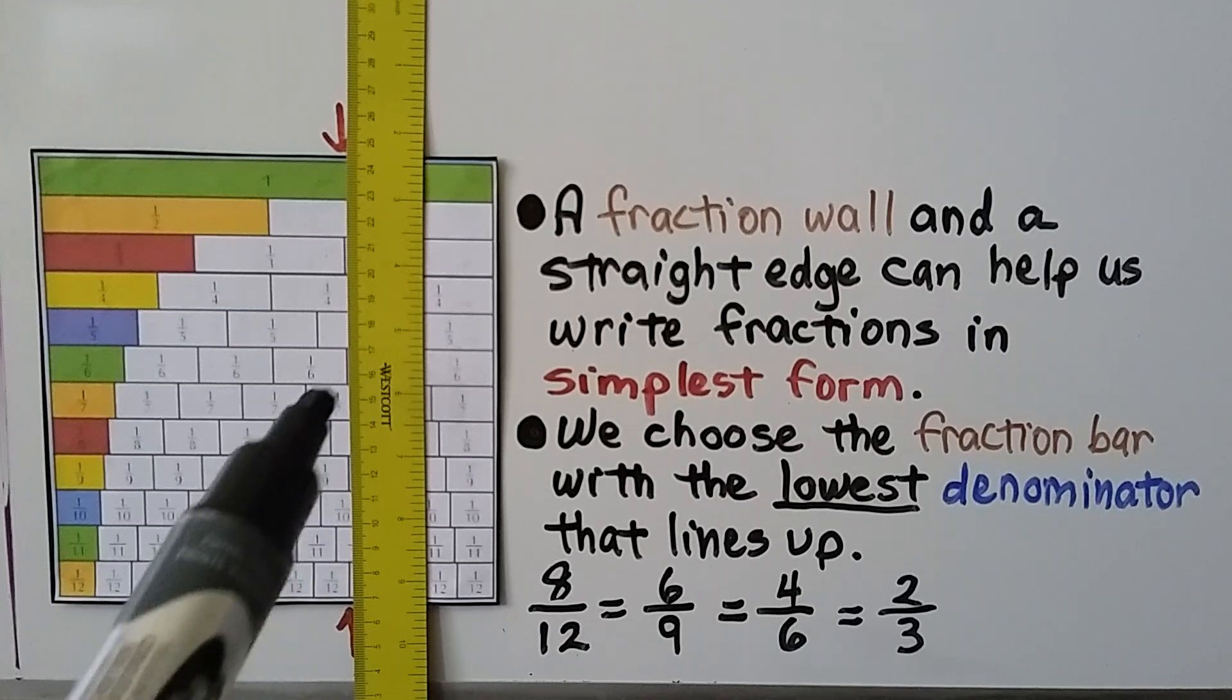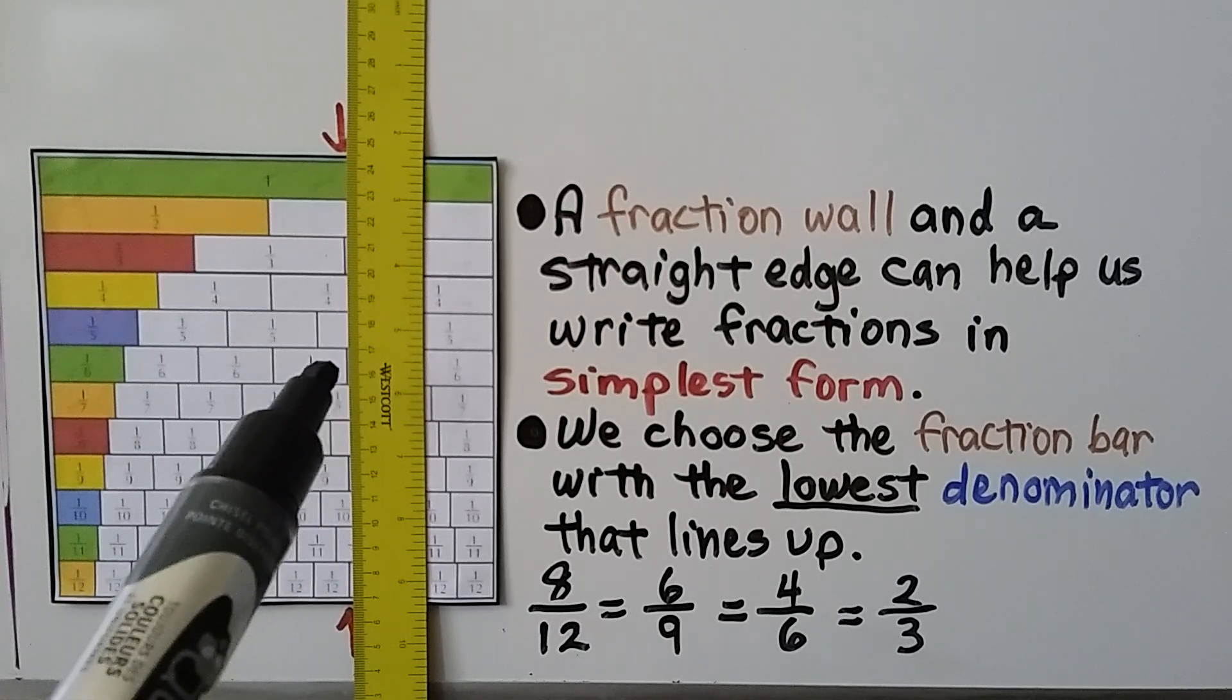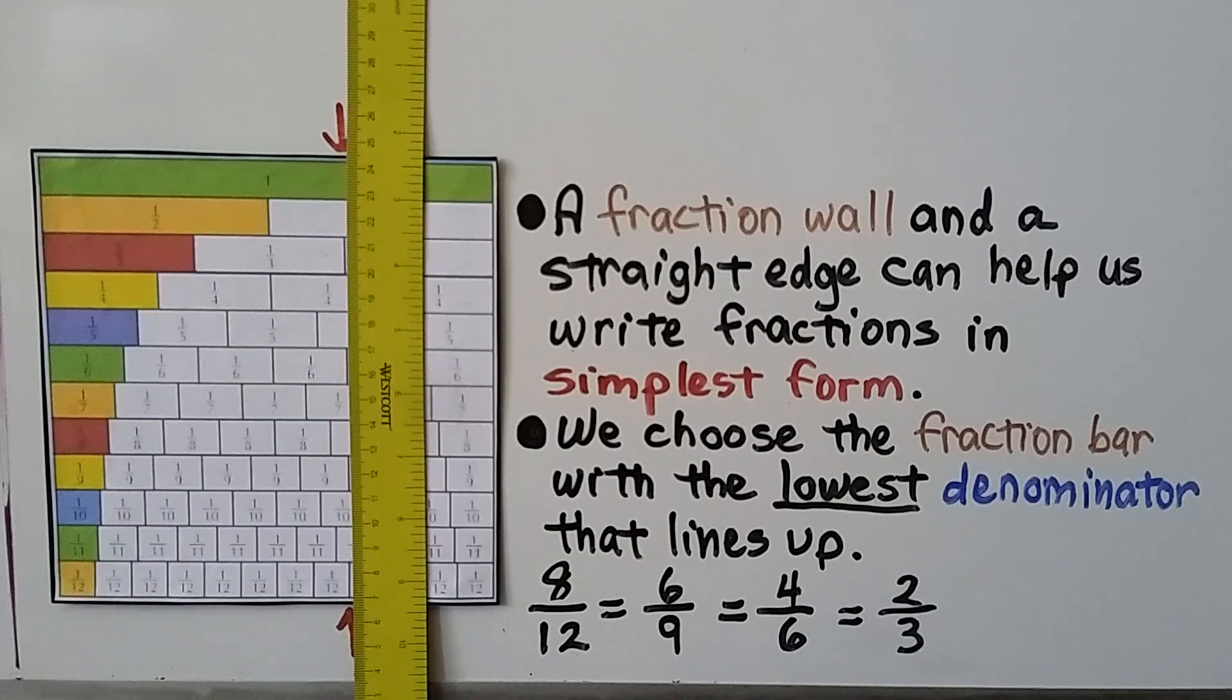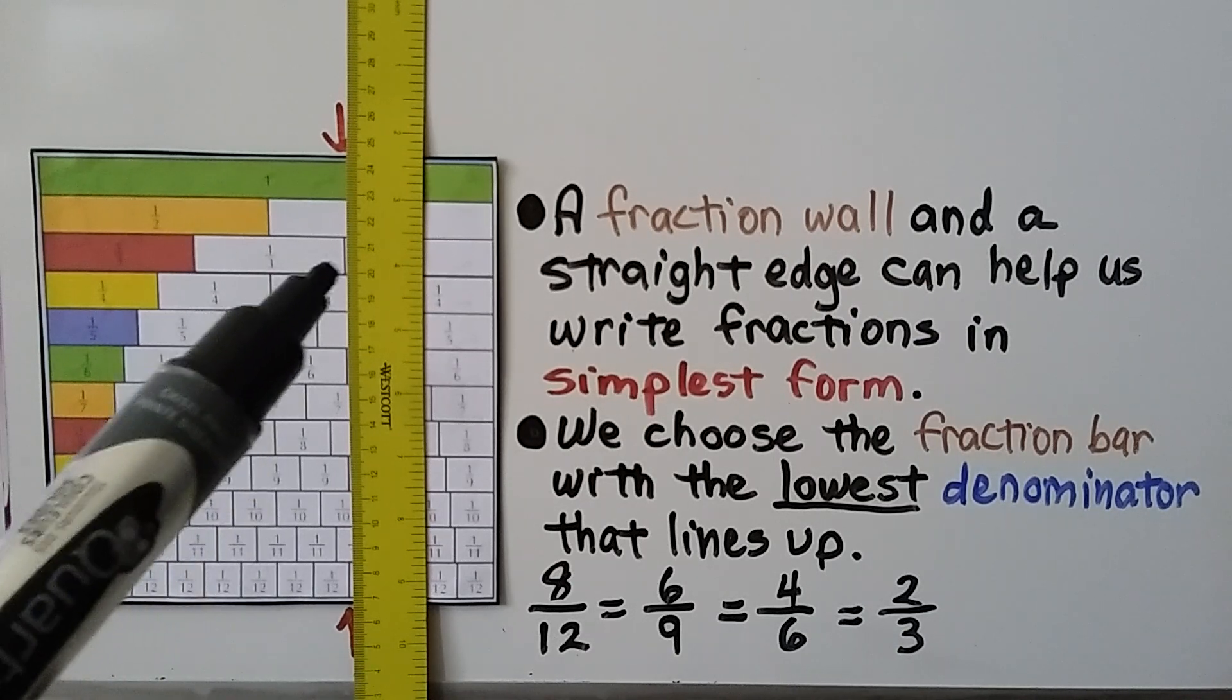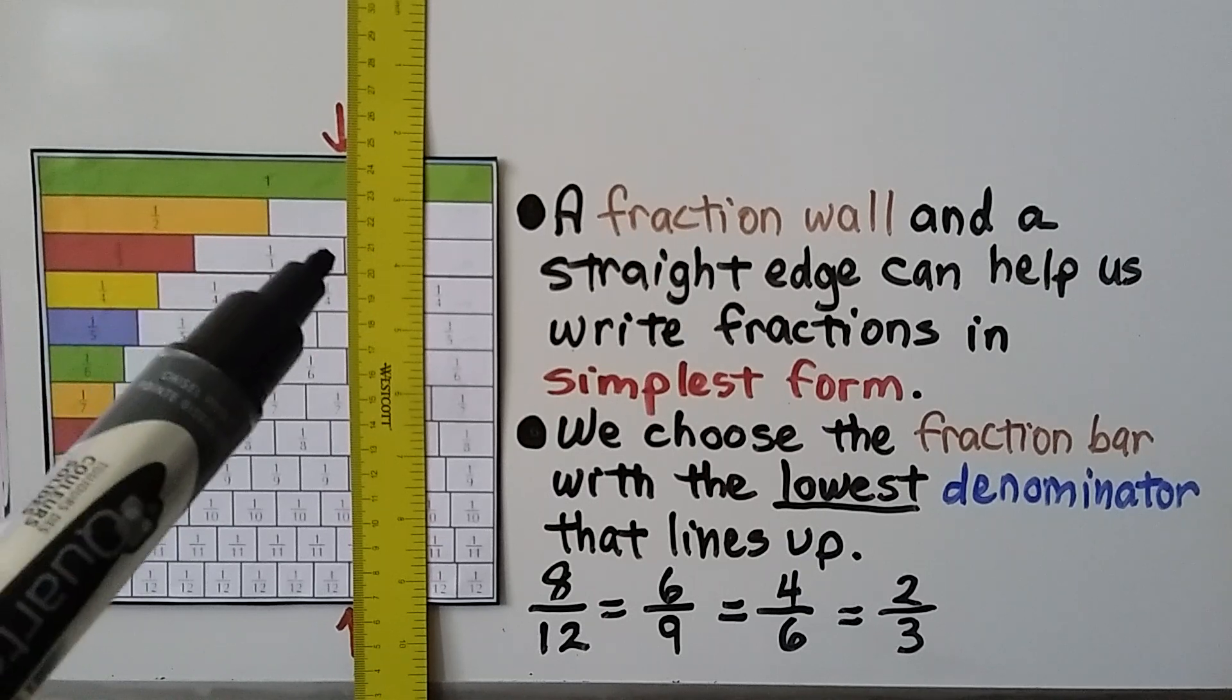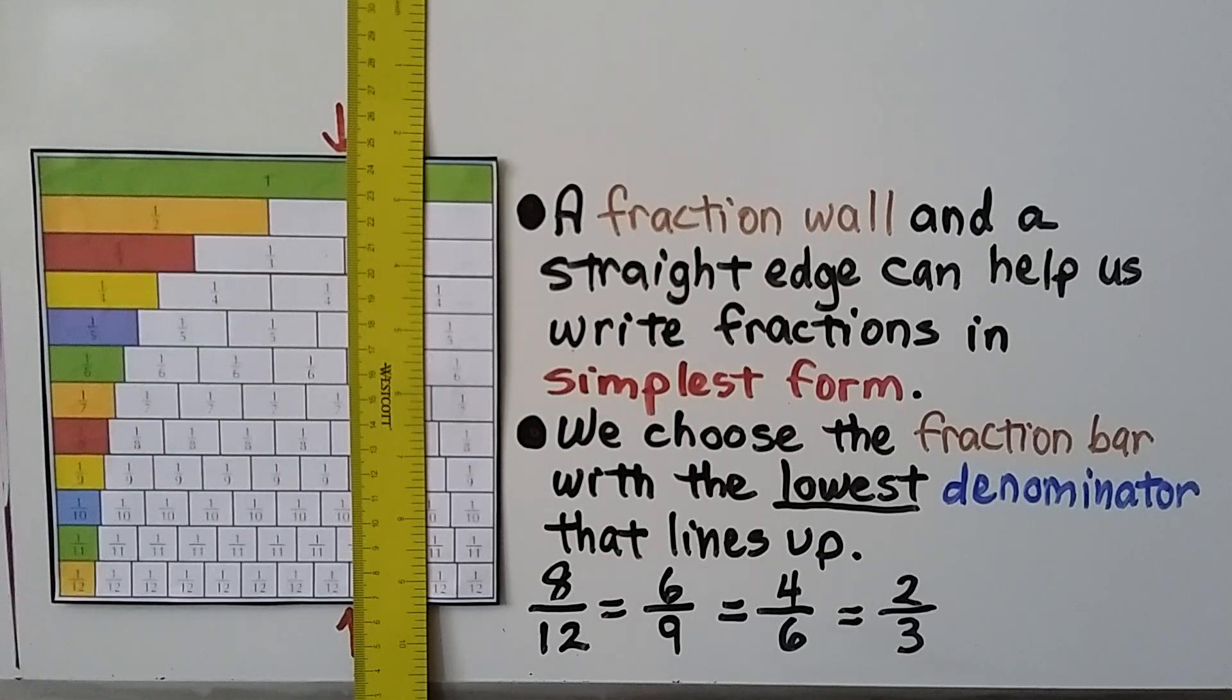These fractions are equal to each other. They're equivalent fractions. To write eight-twelfths in simplest form, we choose the lowest denominator, the three. It's two-thirds. I have copies of this fraction wall on my Joanne School Facebook page that you can take a screenshot of or you can copy and paste it and print it for yourself.